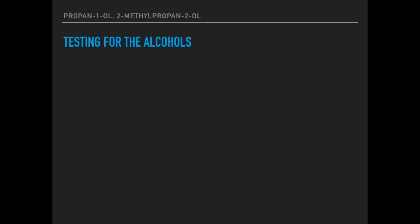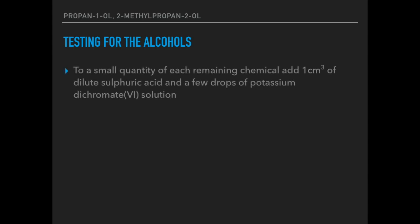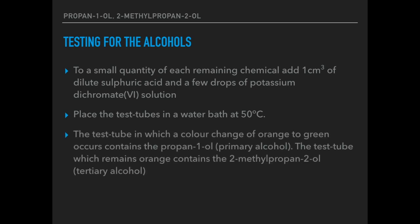We're down to just 2 alcohols now: a primary one, propan-1-ol, and a tertiary one, 2-methylpropan-2-ol. To a small quantity of the remaining chemicals, add 1 cm³ of dilute sulfuric acid and a few drops of potassium dichromate(VI) solution — acidified potassium dichromate. It's important to specify dilute sulfuric acid. Place the test tubes in a water bath at 50°C. The test tube in which you get a colour change from orange to green must be the primary alcohol, propan-1-ol.